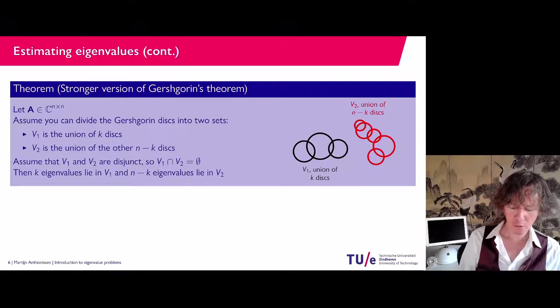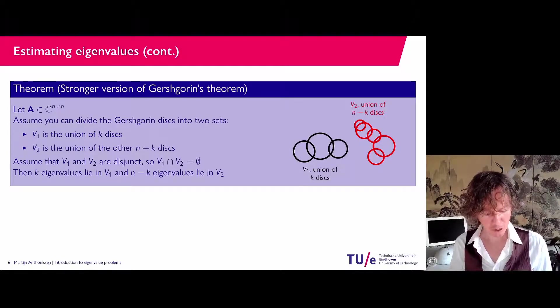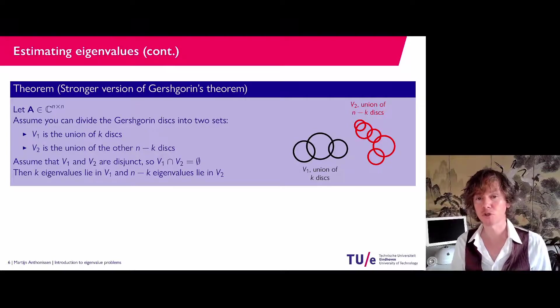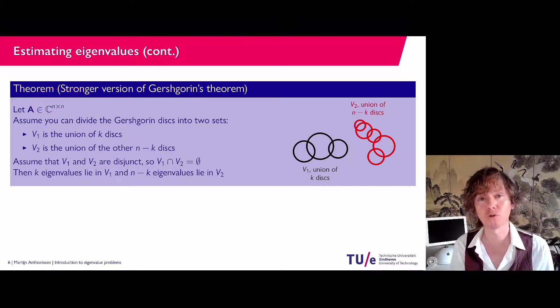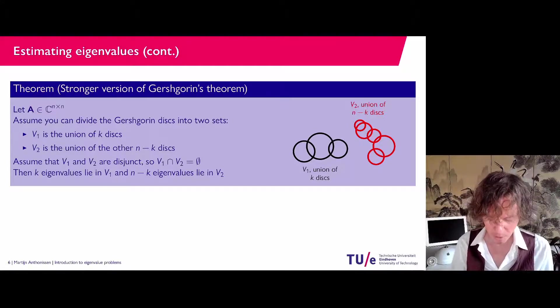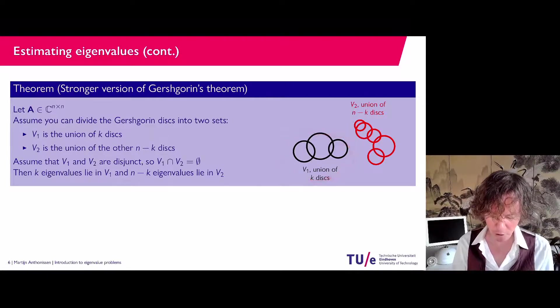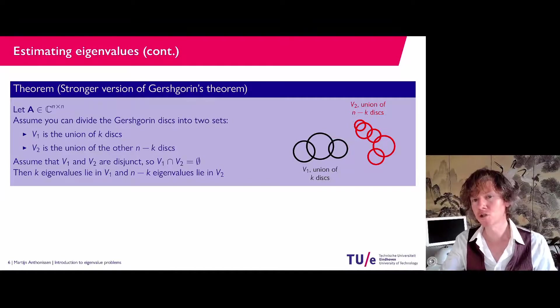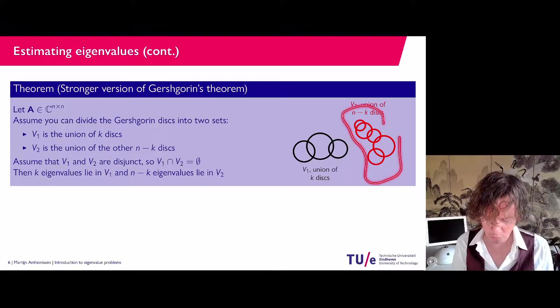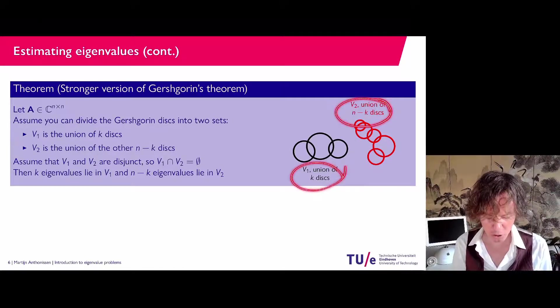Now, I already said there is a bit of a stronger version of Gershgorin's theorem. And that tells that if you can divide the disks into multiple sets. Here I drew two sets. So I'm going to assume that our matrix is n times n again. So in principle, it has n eigenvalues. And say that we have a set here of three of them, which are partially overlapping, but are completely disjunct from the red ones here. So there is also a set of n minus K disks. Here are K disks. Here are n minus K disks.